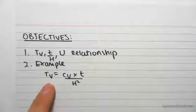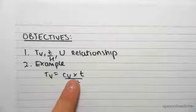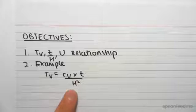We already know dimensionless time from the previous video as CV times T on H squared, where H is the drainage path.